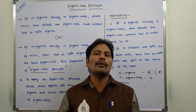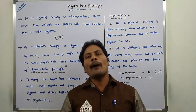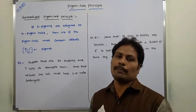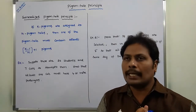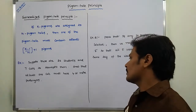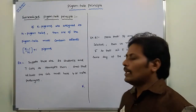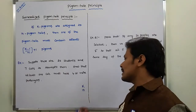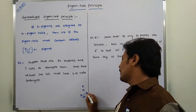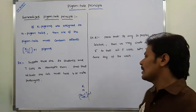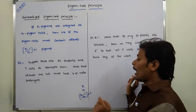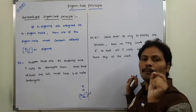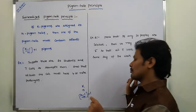Next we go to the Generalised Pigeon Hole principle. Suppose there are k pigeons and n pigeon holes. Then at least one pigeon hole contains ⌊(k-1)/n⌋ + 1 pigeons. This is the statement of the Generalised Pigeon Hole principle.